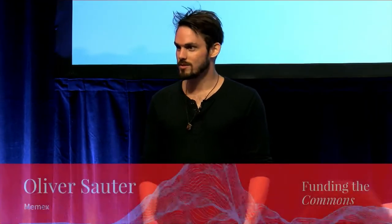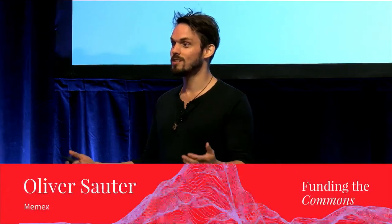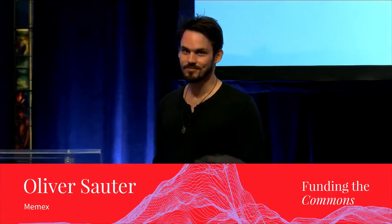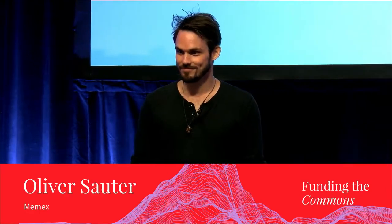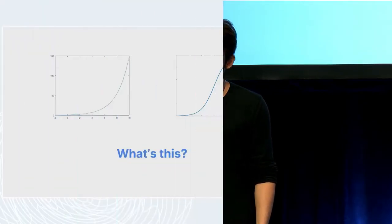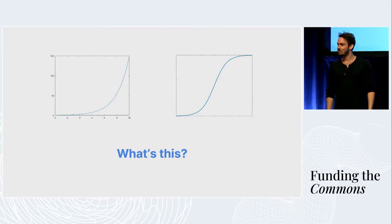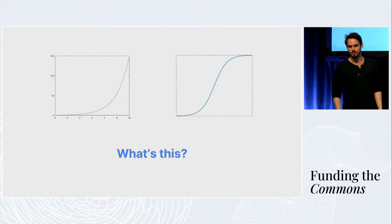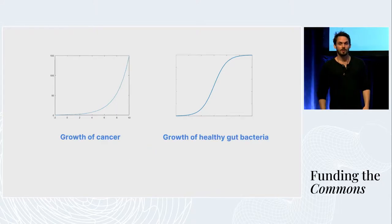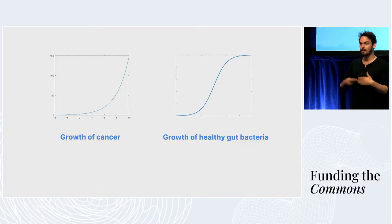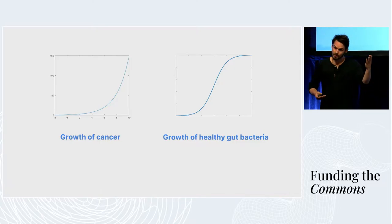My first question to all of you is, what do you think these curves represent? You can shout it out if you'd like to. Population growth. Adoption. Pretty good. So yes, but also the way cancer grows, for example, and the way healthy gut bacteria grows.